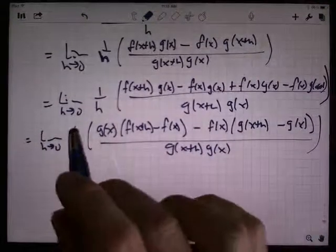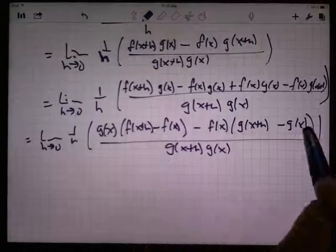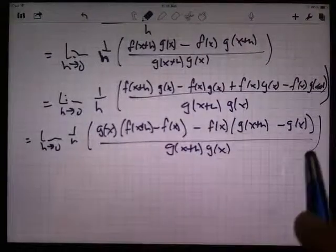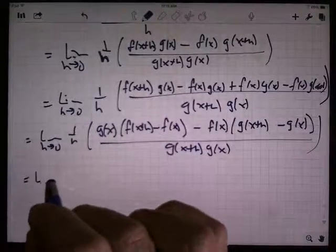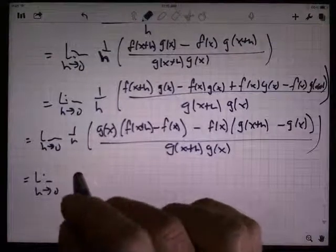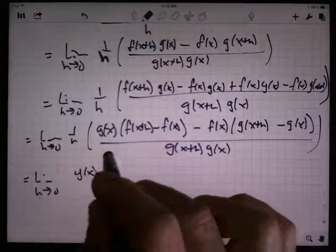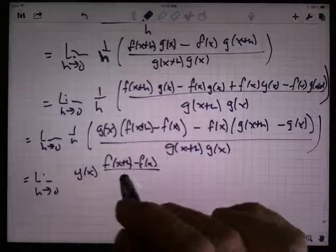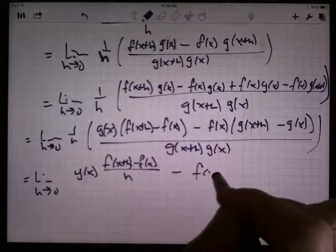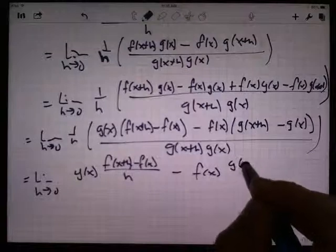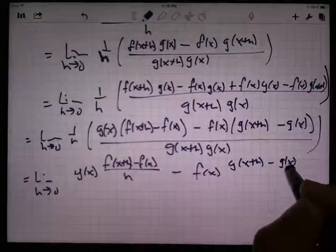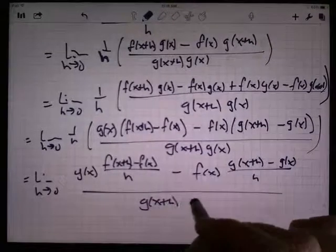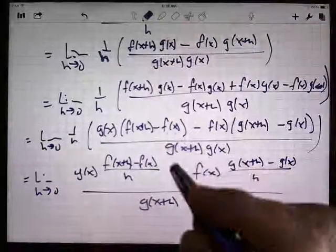Now I'm going to distribute the 1 over h in, multiply it times the numerator. So this is the limit as h goes to 0 of g of x times f of x plus h minus f of x, times the 1 over h, minus f of x times g of x plus h minus g of x all over h. And then the whole thing is over g of x plus h times g of x.